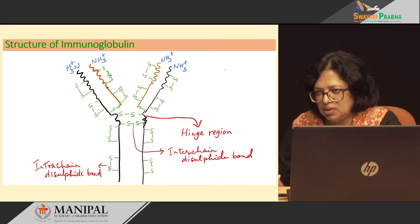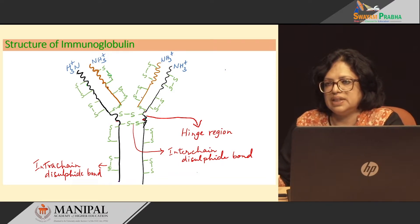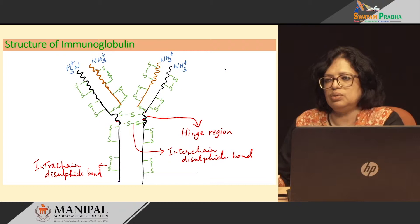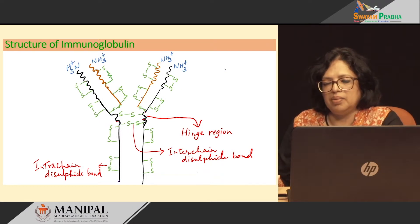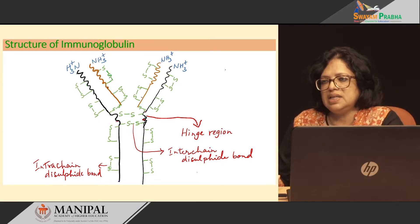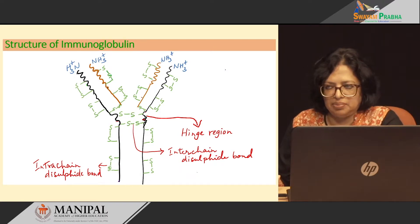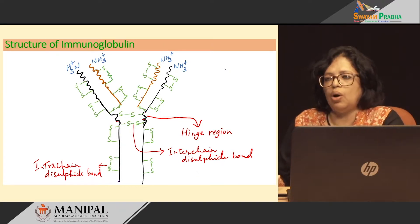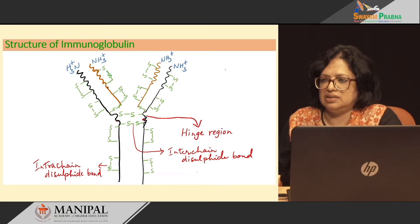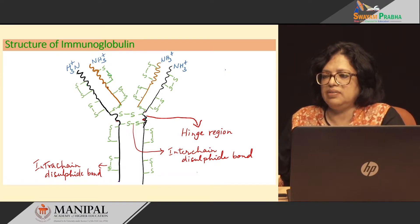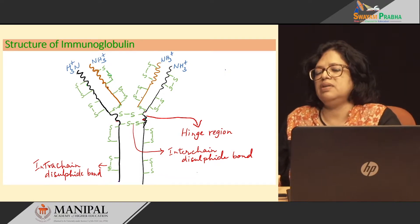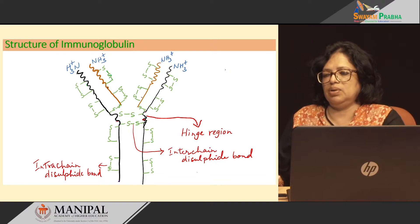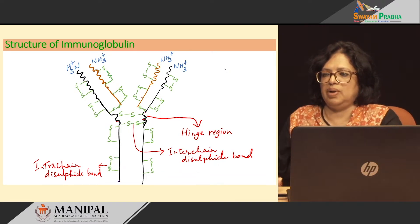In one immunoglobulin, we have four chains: two heavy chains of maybe any of the G, A, M, D, or E type, and two kappa chains or two lambda chains. So totally, we have only four chains in an immunoglobulin molecule.